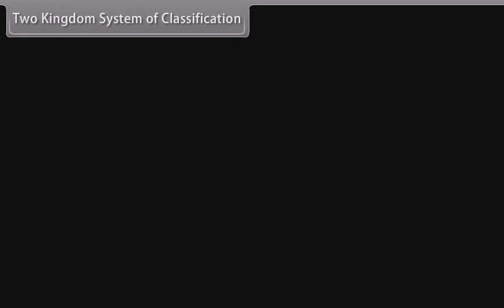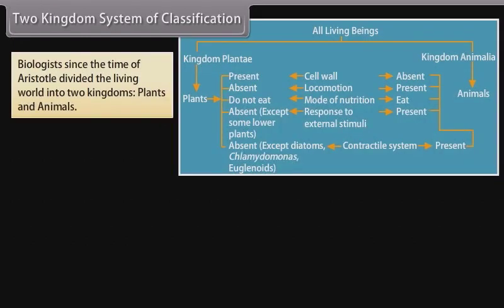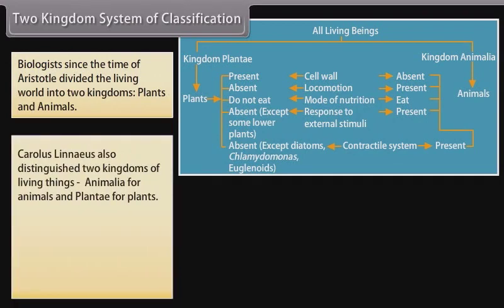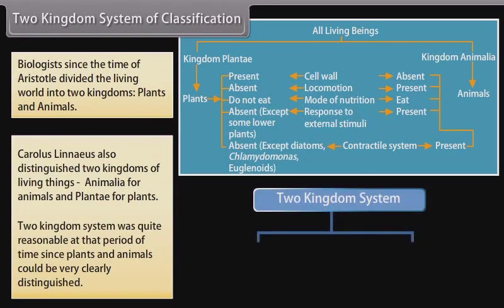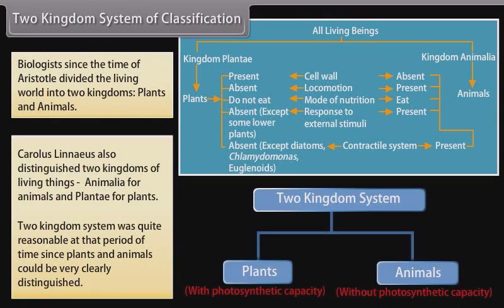Two kingdom system of classification: biologists since the time of Aristotle divided the living world into two kingdoms — plants and animals. Carolus Linnaeus also distinguished two kingdoms of living things: Animalia for animals and Plantae for plants. This two kingdom system was quite reasonable at that time since plants and animals could be very clearly distinguished.